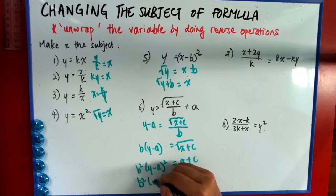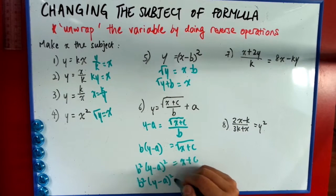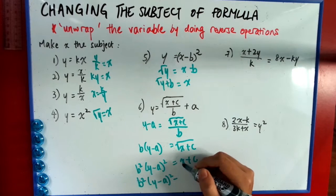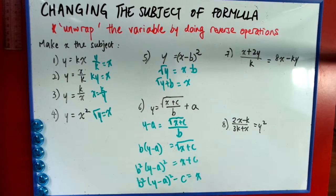Then very lastly, I minus the c. So you can see it's kind of like unwrapping x. So this is the final form. Of course you can simplify this a bit if you find that it's a bit messy, but roughly this is how it should look like.